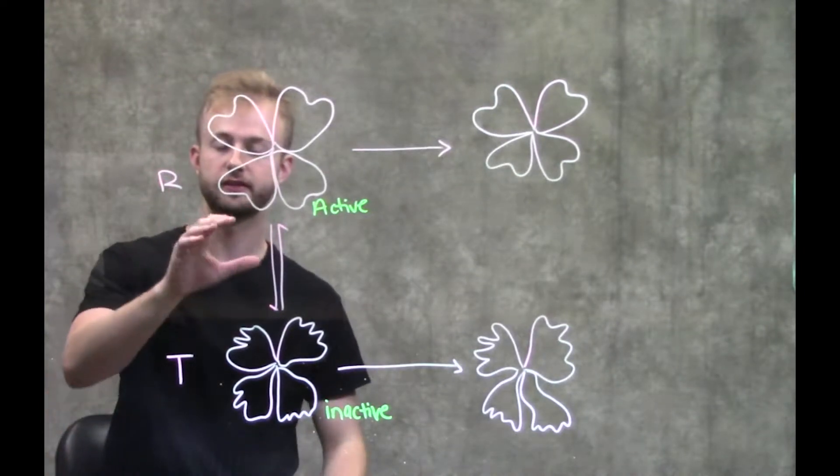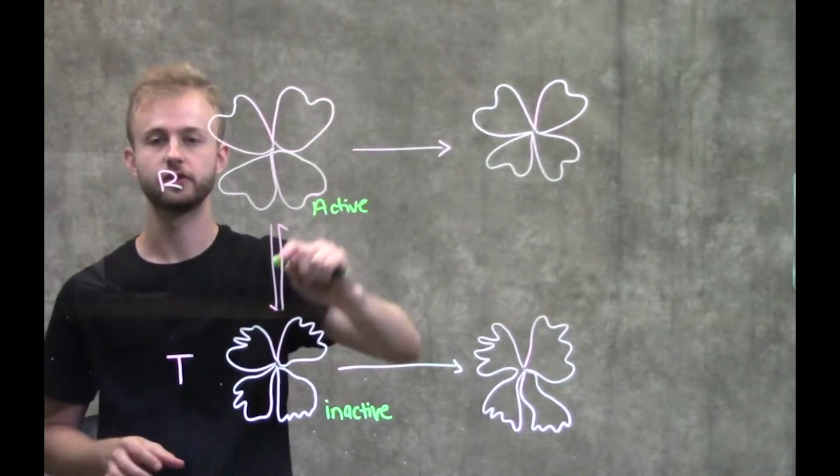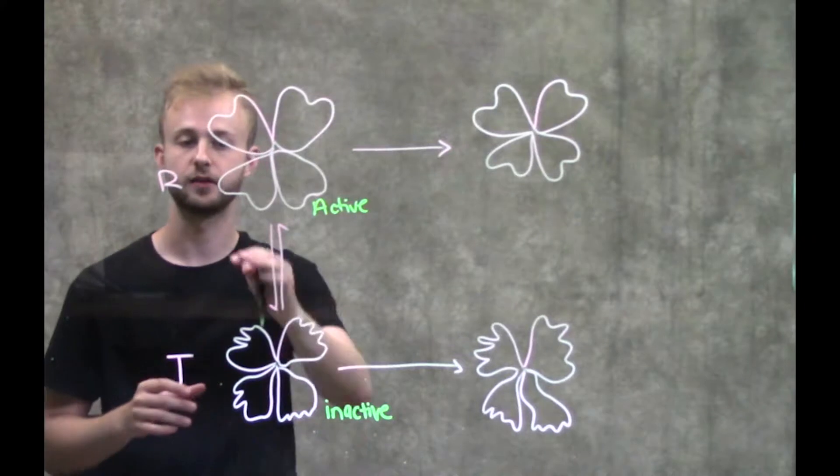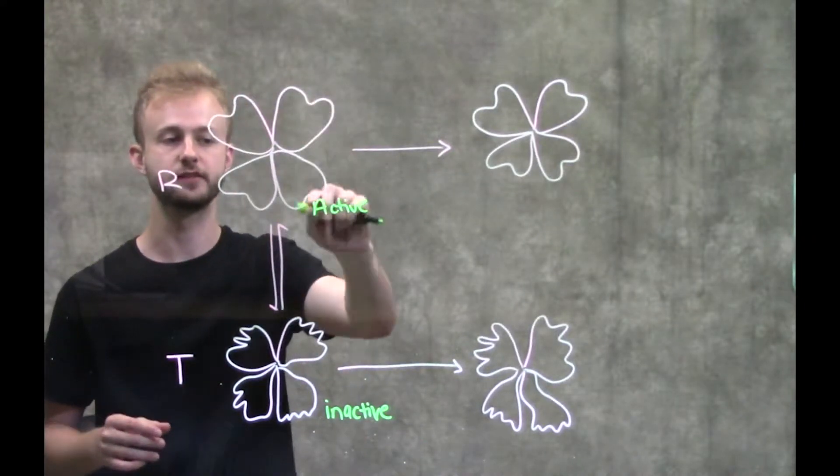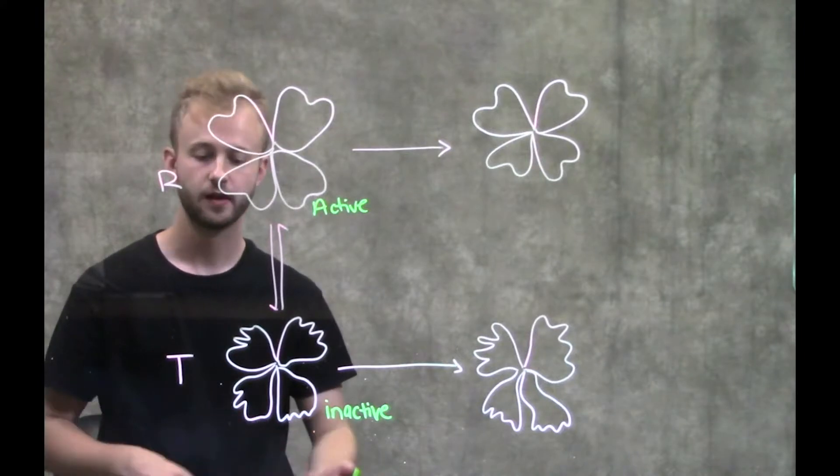In the relaxed state, when a substrate binds to it, it's going to communicate to the other active sites in the enzyme on the other subunits that a substrate has bound, and it's going to increase the ability of these other subunits to bind to the substrate.